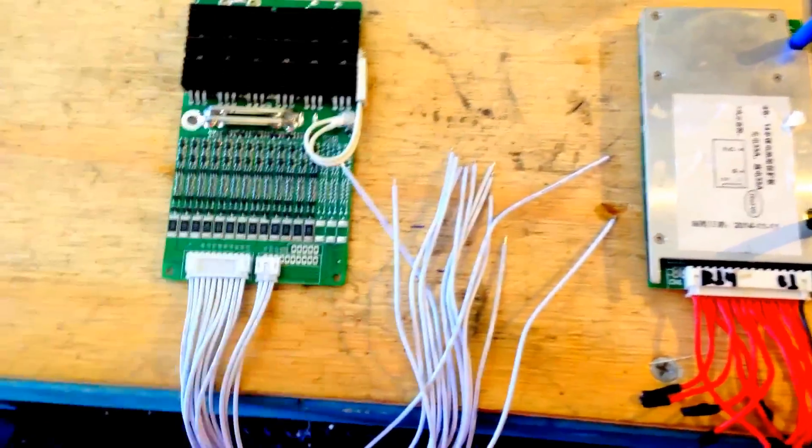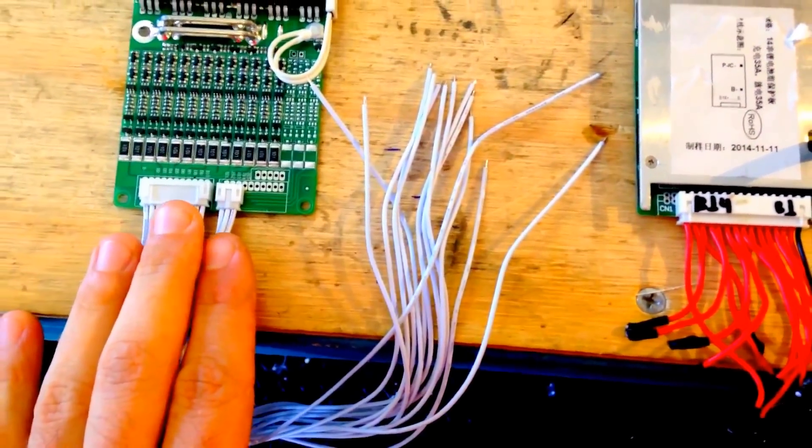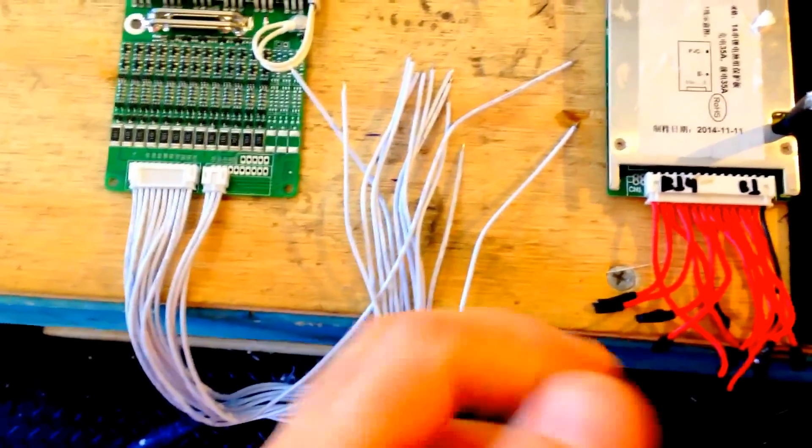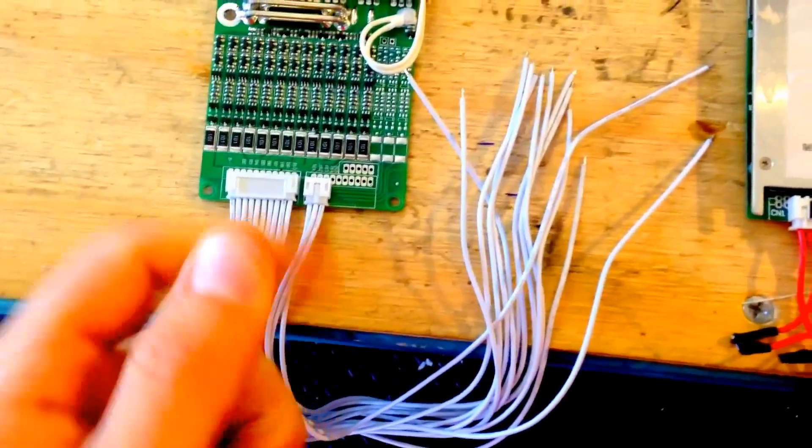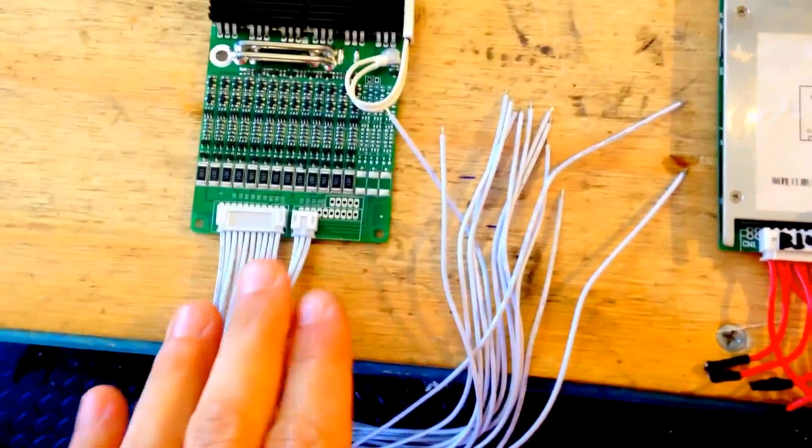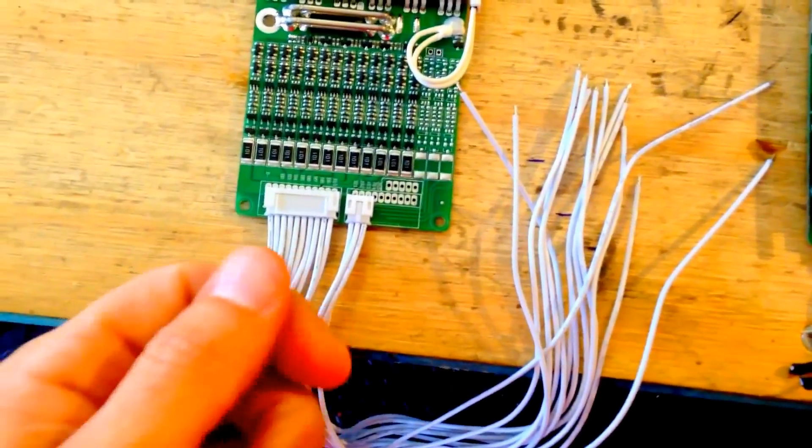And then you're going to get your balancing leads and start wiring one by one. Double check, triple check - make sure there's no wires crossed out. It's very easy to mix up wires here; they're all the same color.